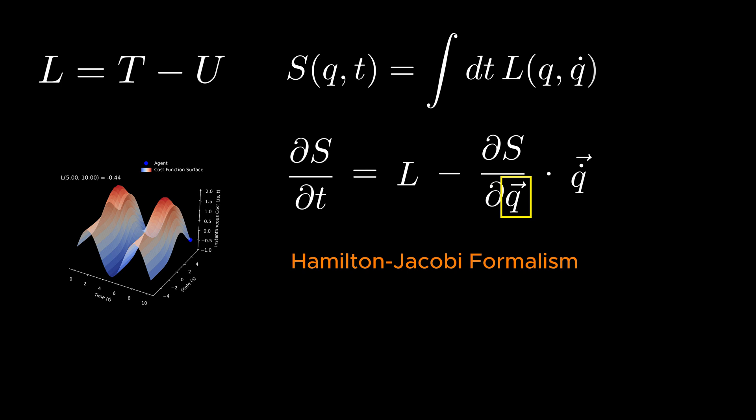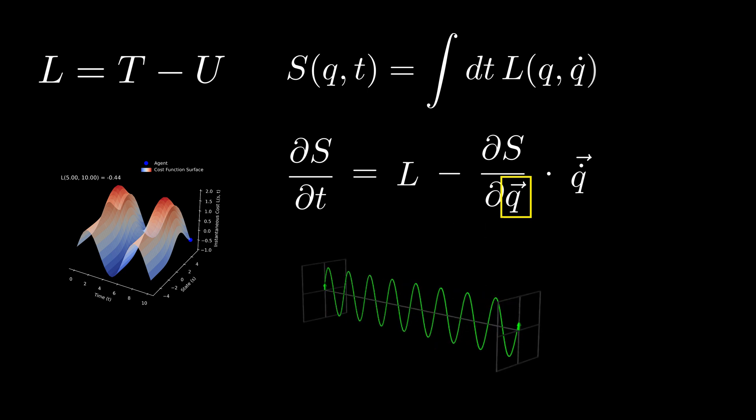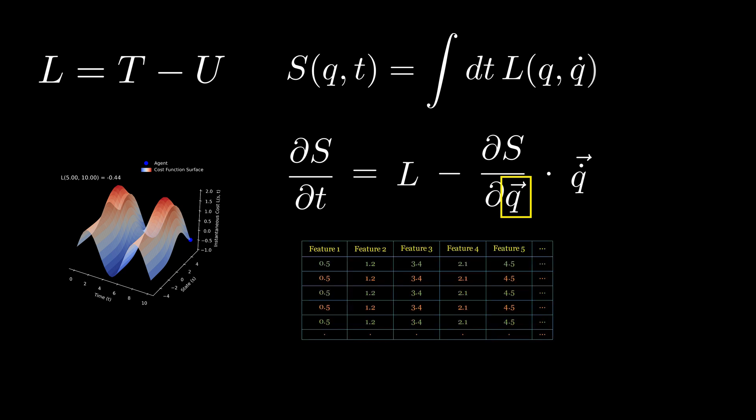For example, in classical mechanics, it refers to the position of a particle. In electromagnetism, it refers to the magnitude of electromagnetic fields. In machine learning, it refers to the features of the system, or simply speaking, the columns of the spreadsheet. We will get back to this equation later in the video.